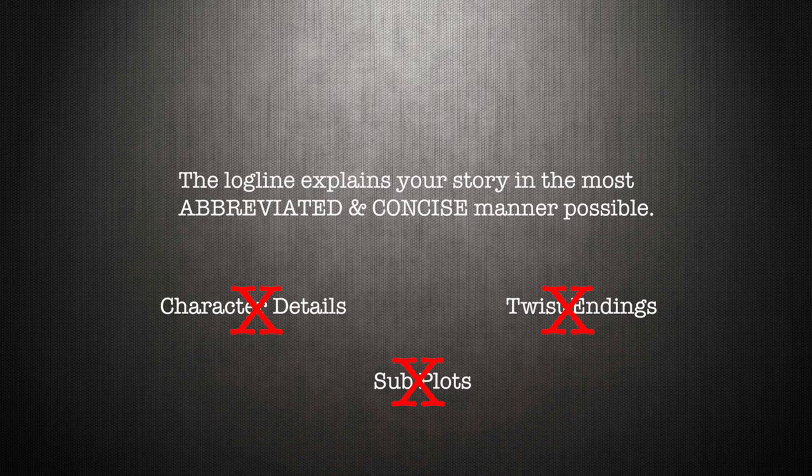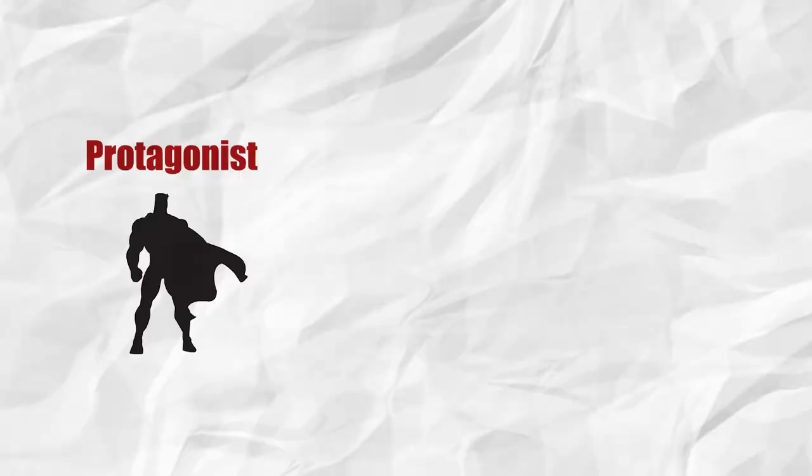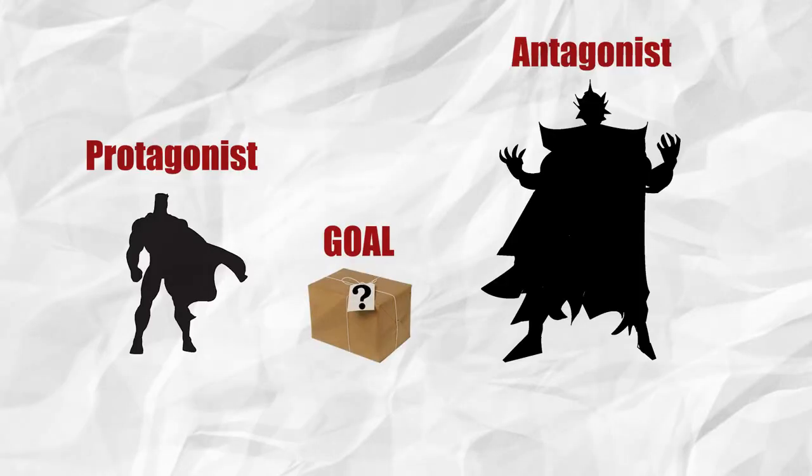So here are three things that every logline needs in order to be effective or at least clear: the protagonist, the goal, and the antagonist or antagonistic force.